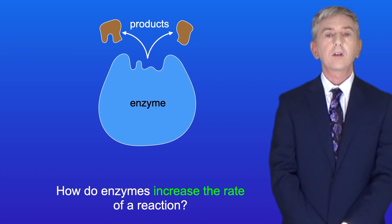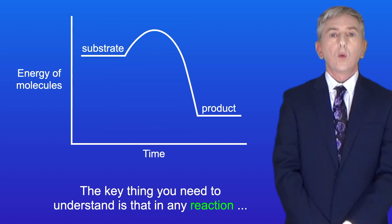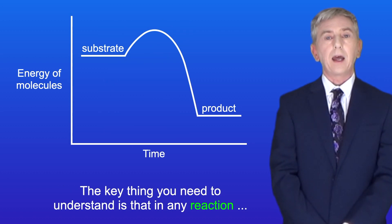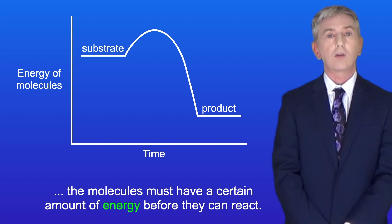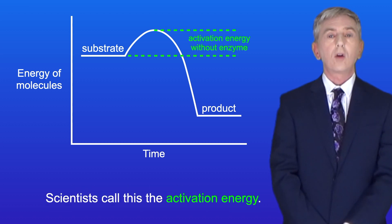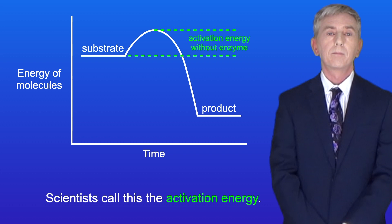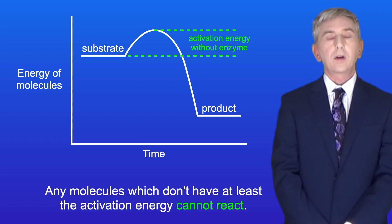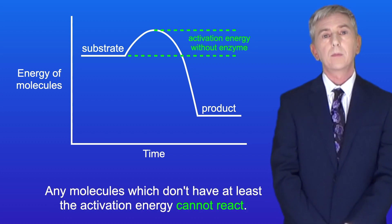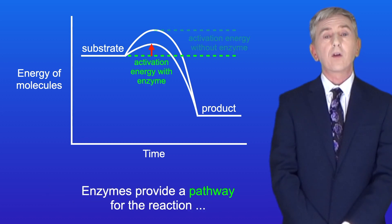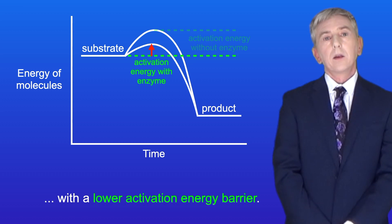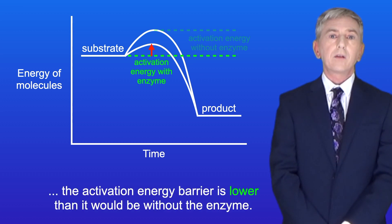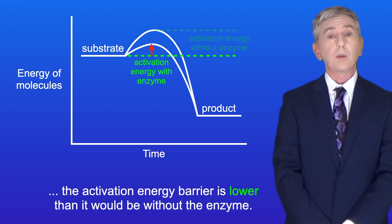So how do enzymes increase the rate of a reaction? In any reaction, the molecules must have a certain amount of energy before they can react — scientists call this the activation energy. Any molecules which don't have at least the activation energy cannot react. Enzymes provide a pathway for the reaction with a lower activation energy barrier, so in the presence of an enzyme, the activation energy barrier is lower than it would be without the enzyme.